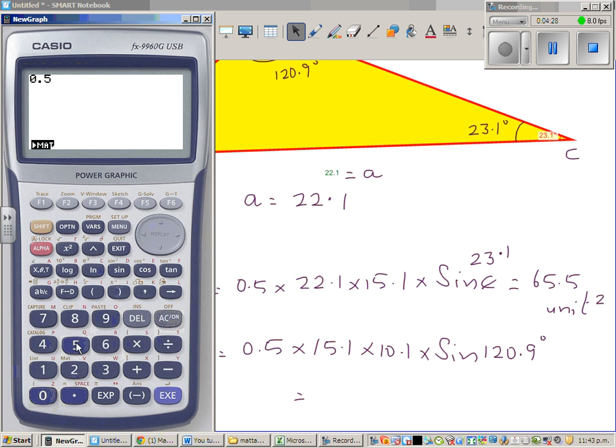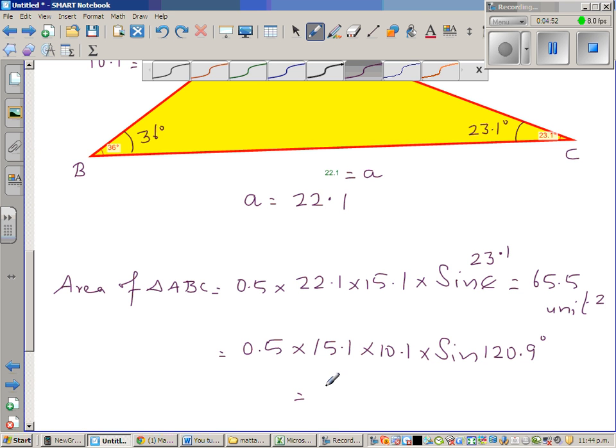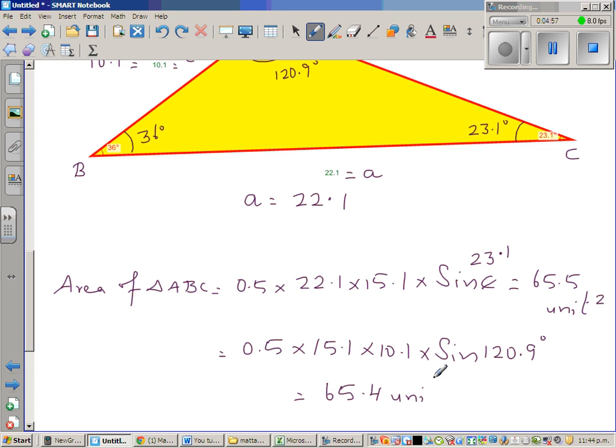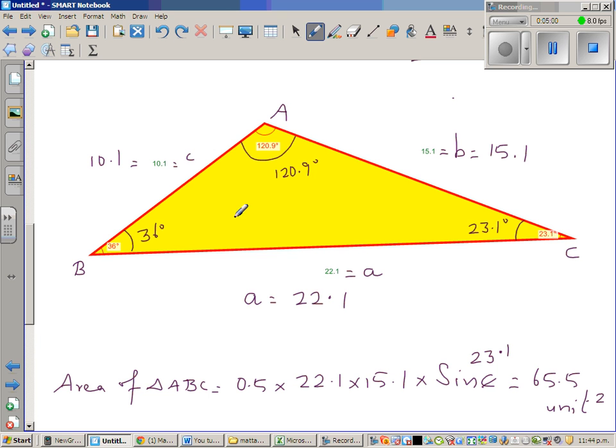0.5 times 15.1 times 10.1 times sine 120.9 which is 65.4. This measurement is not exactly, if it wasn't exact but for practical purpose this you can say 65.4. Both the answers are right, 65.4 unit squared. I would like you to do the if you take A and C and see what answer you will get.